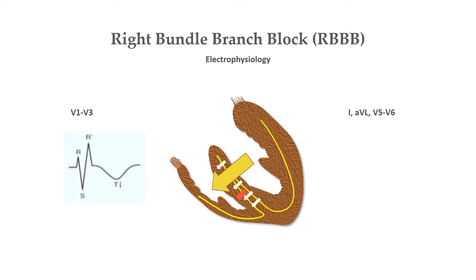This produces a secondary R wave, denoted as R prime, in the pre-cordial leads, and in lateral leads there are wide and slurred S waves. Normal activation of the left ventricle means that cardiac axis remains normal in isolated right bundle branch block.